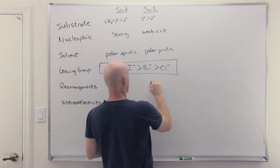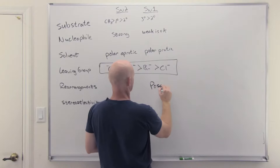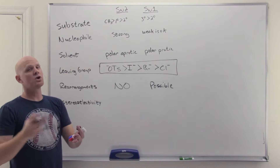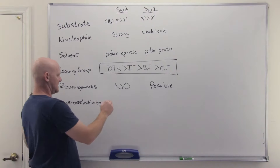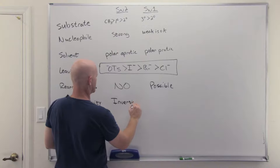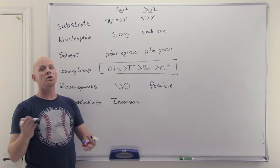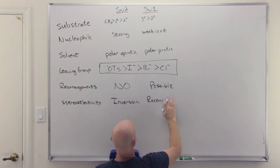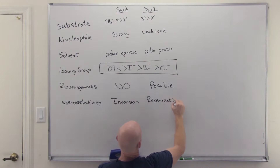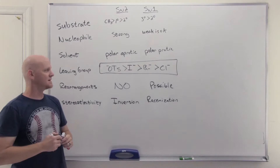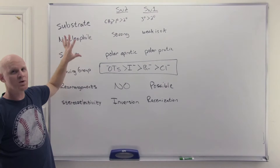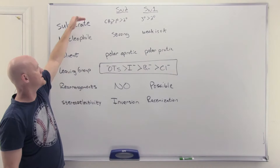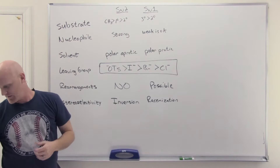For rearrangements: as long as you're forming a carbocation, rearrangements are possible for SN1. Whereas for SN2, no rearrangements — there's no carbocation intermediate, in fact there's usually no intermediate at all. For stereoselectivity: SN2 reactions undergo inversion — you'll only notice this if it happens at a chiral center, sometimes called Walden inversion. For SN1, you're attacking an SP2 hybridized trigonal planar flat carbocation, so you can attack from either side. If it happens at a chiral center, racemization will take place. Your nucleophile is the first and most important indicator, then your substrate, and your solvent is of lesser importance after that.